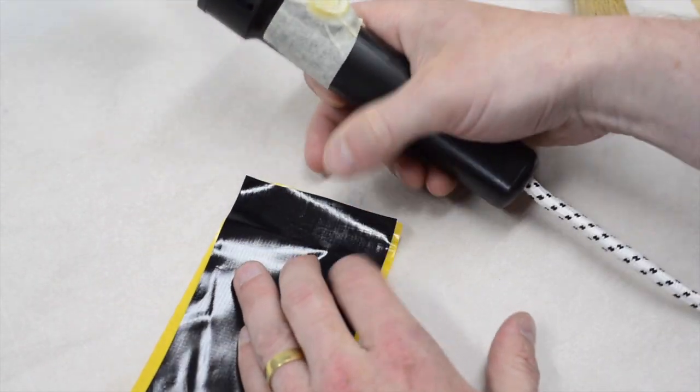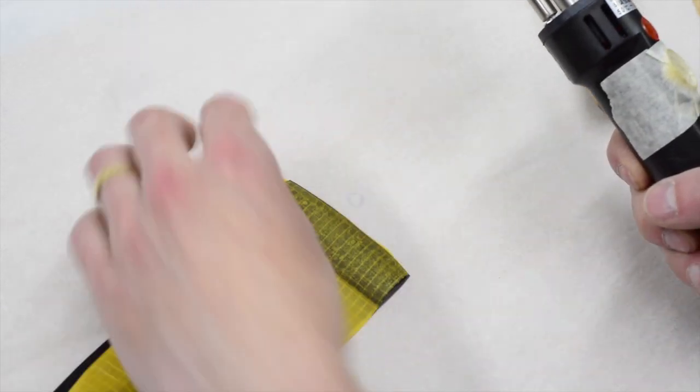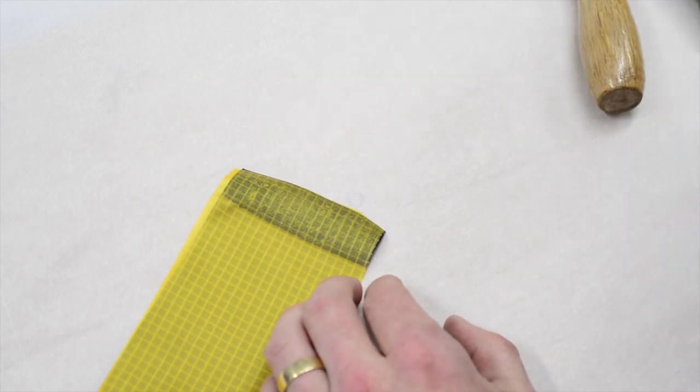When the iron's temperature is set correctly you can get a good weld without having to iron for so long that it melts the TPU on the bottom of the floor fabric.